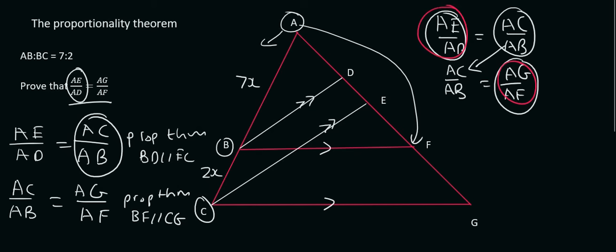So we've actually finished the whole question. We can therefore say that AE over AD is going to be equal to AG over AF.